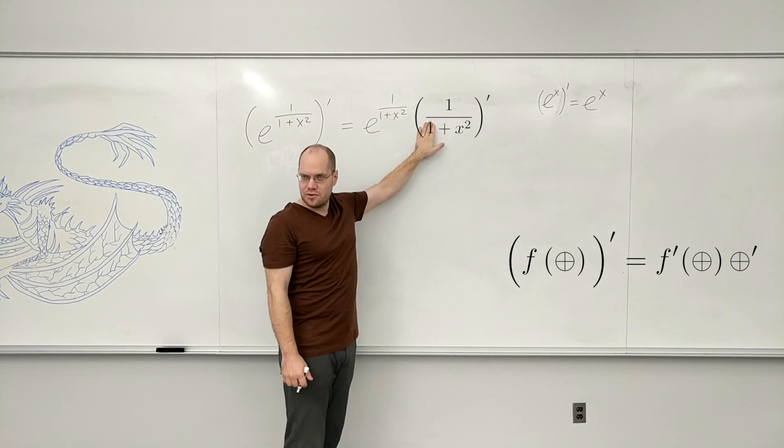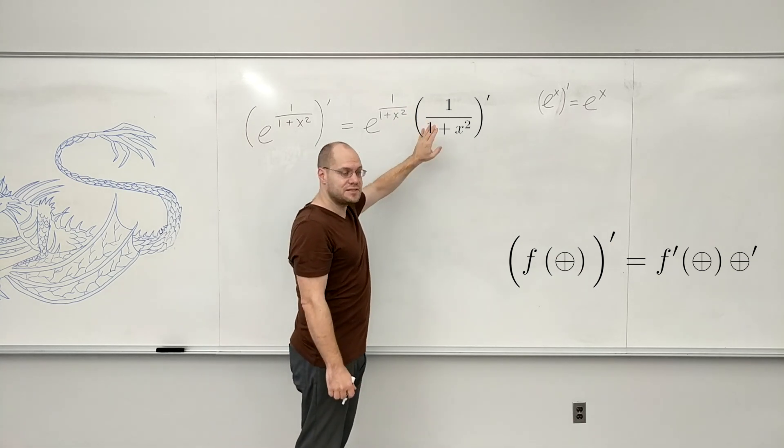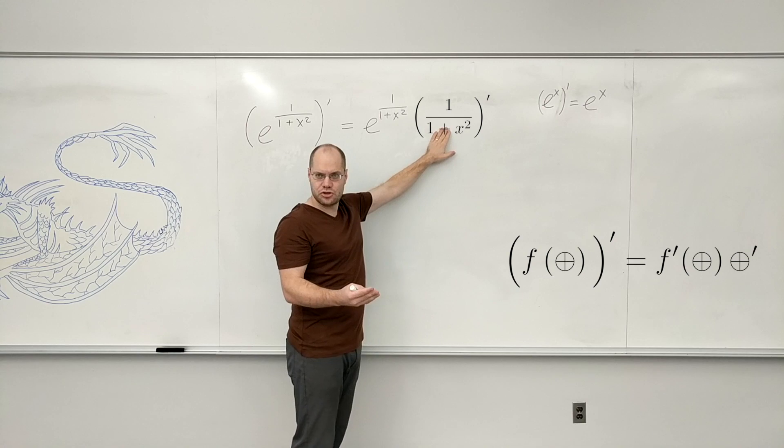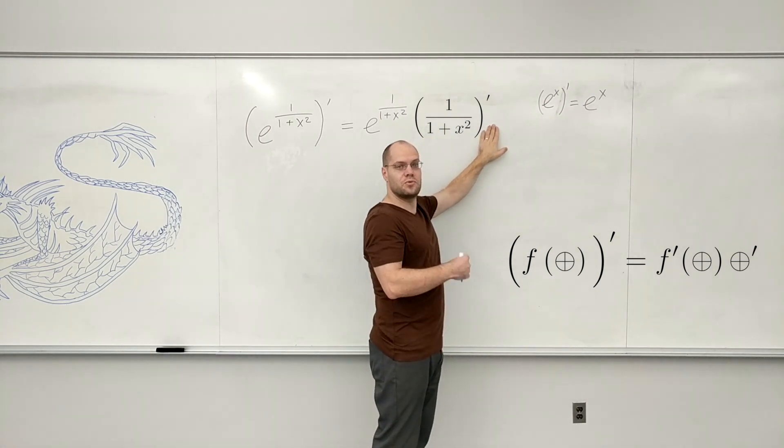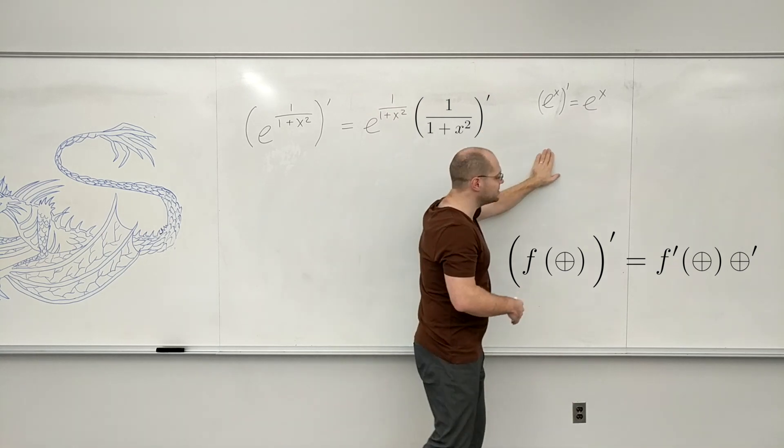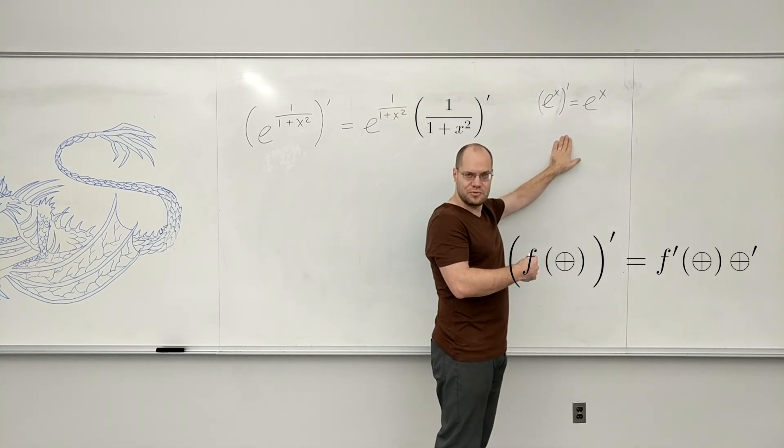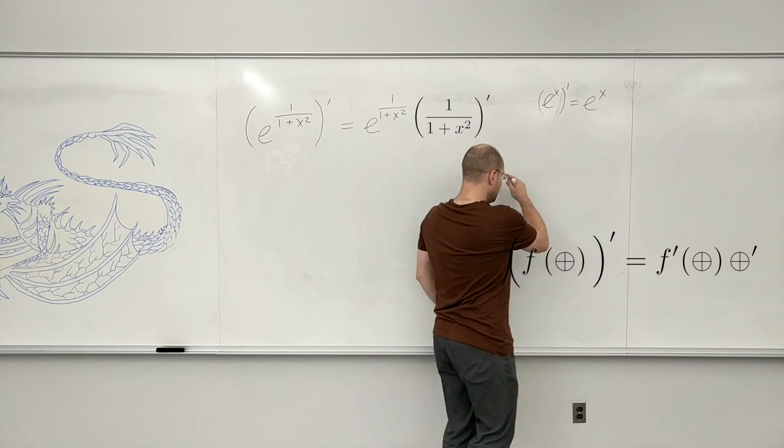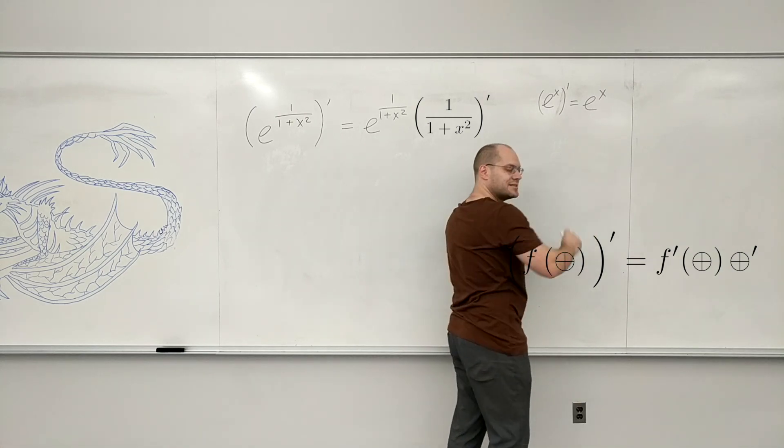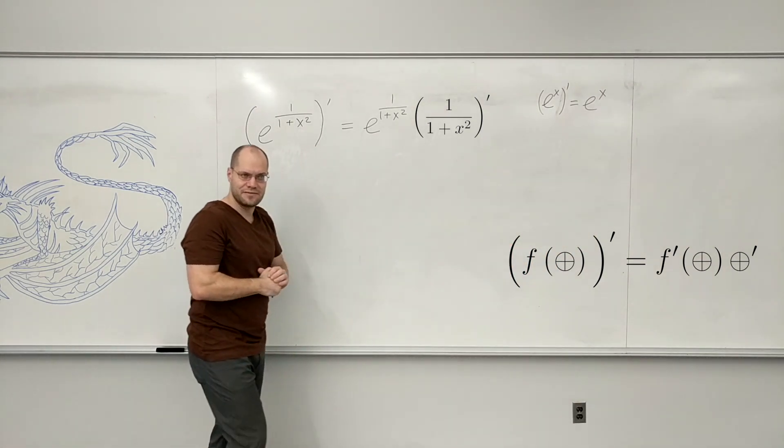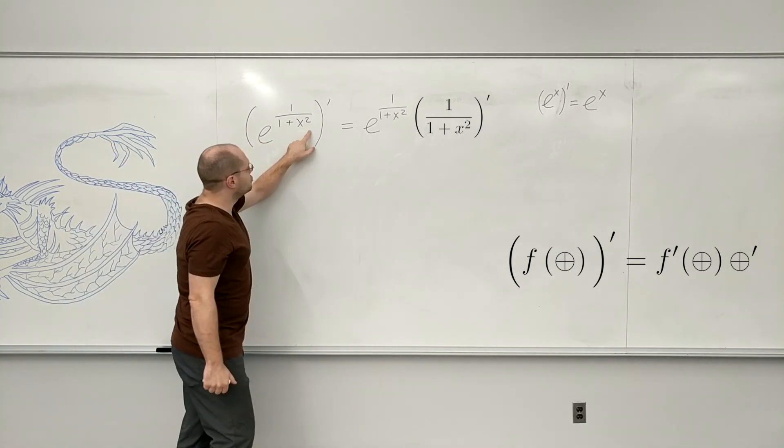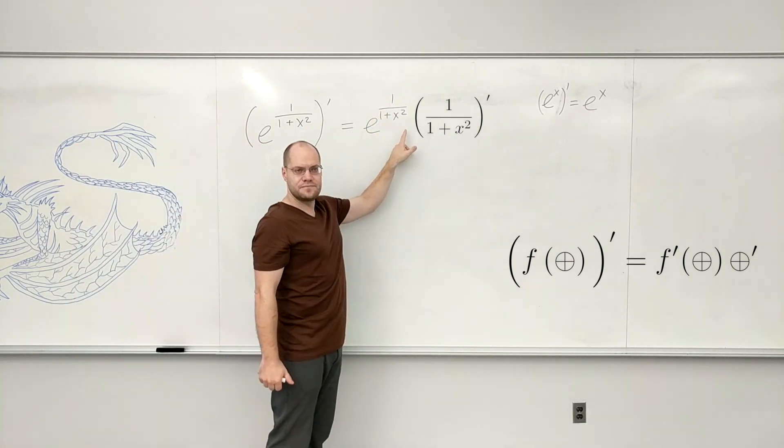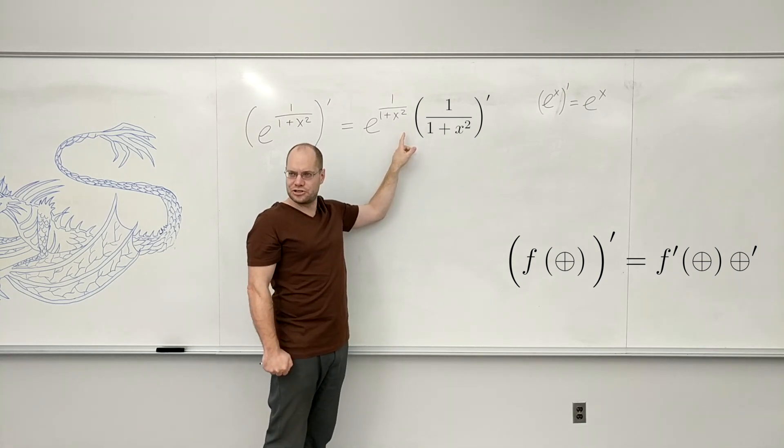You see why it's called the chain rule - every time you recognize the outermost structure, take care of that, and then you're reduced to working with what's left. You do the same thing again and you'll once again be reduced to working with what's left, and so on. You go from one link to the next and it ends up looking like a chain, at least logically.